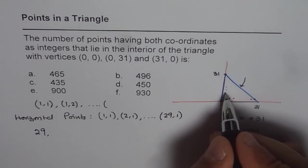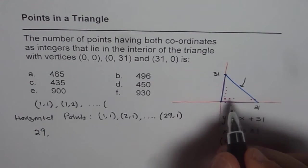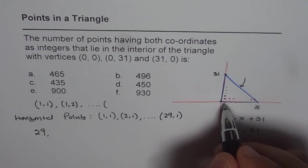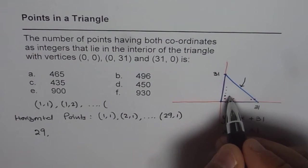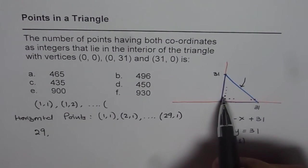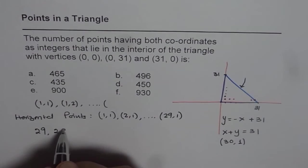As we move up, these number of points are going to reduce. Do you see that? So this point here will be (1,2), then it will be (2,2). So the y points will be decreasing correct. And so we will have 28 points in the next row.